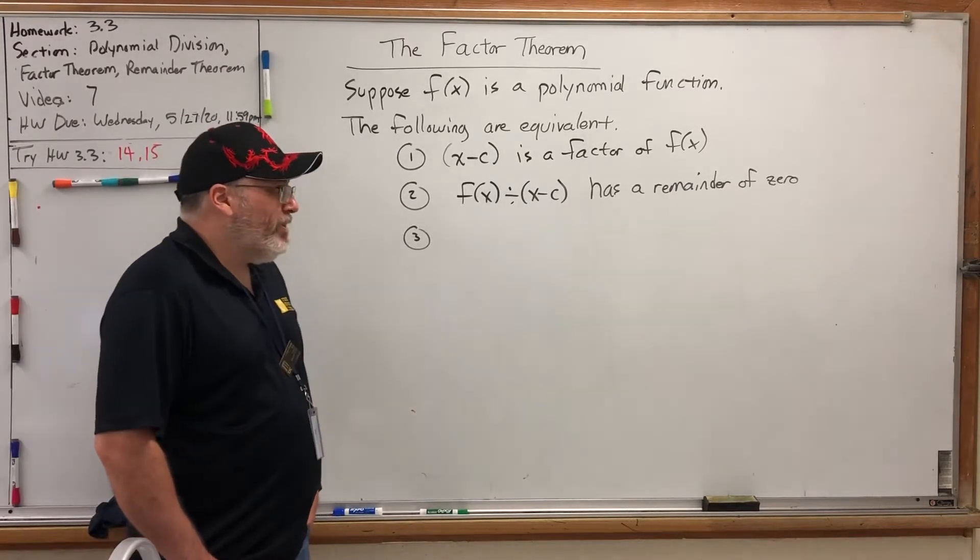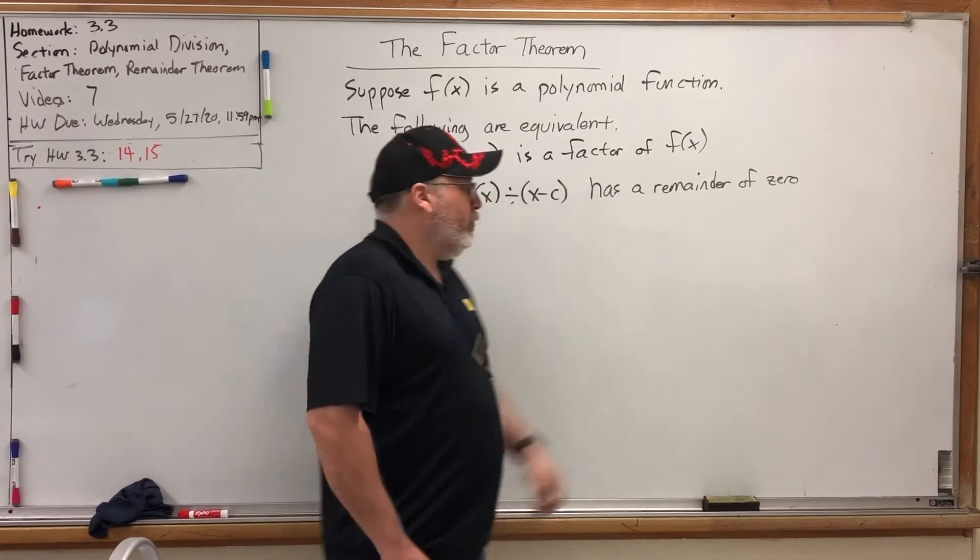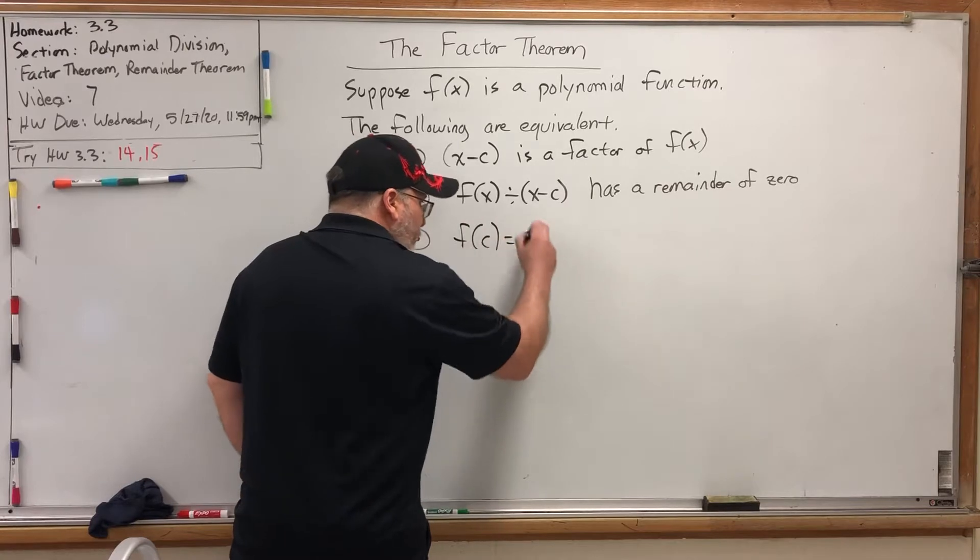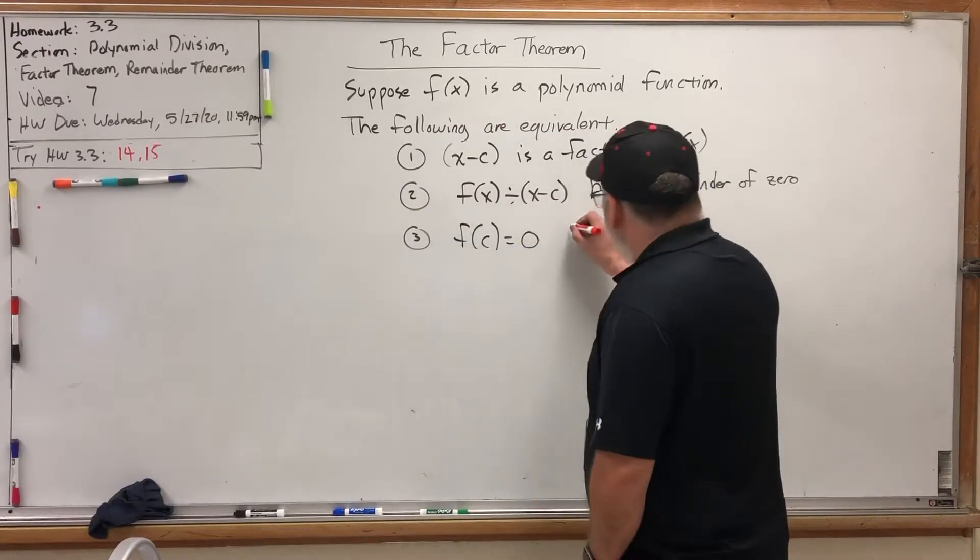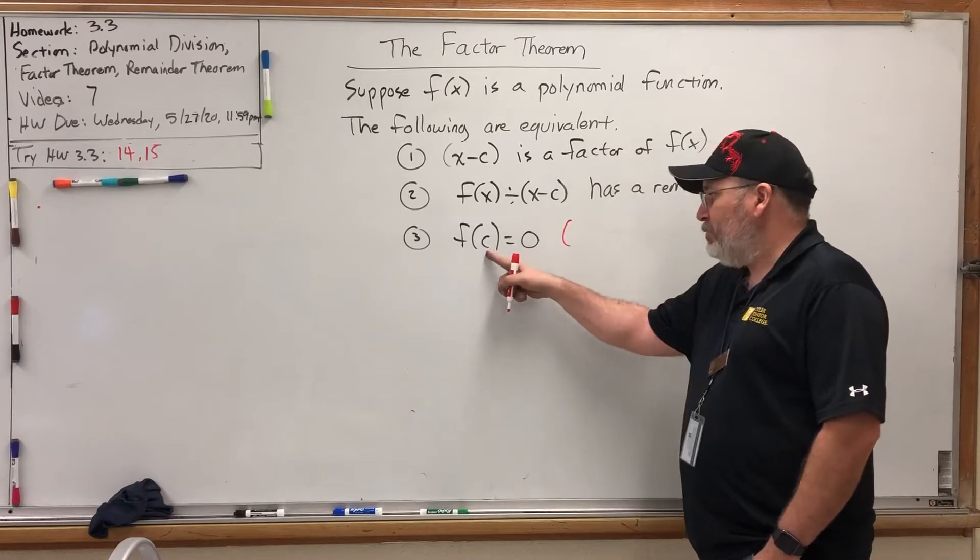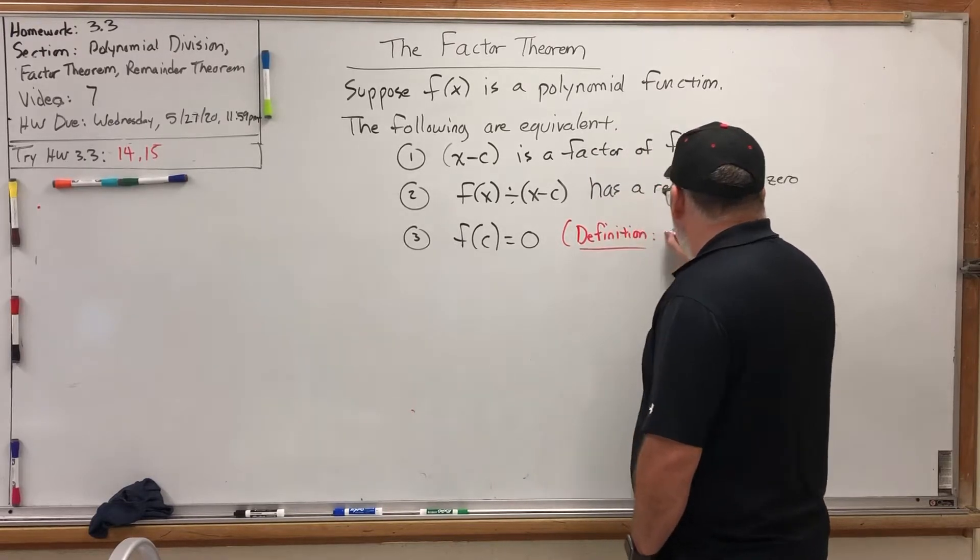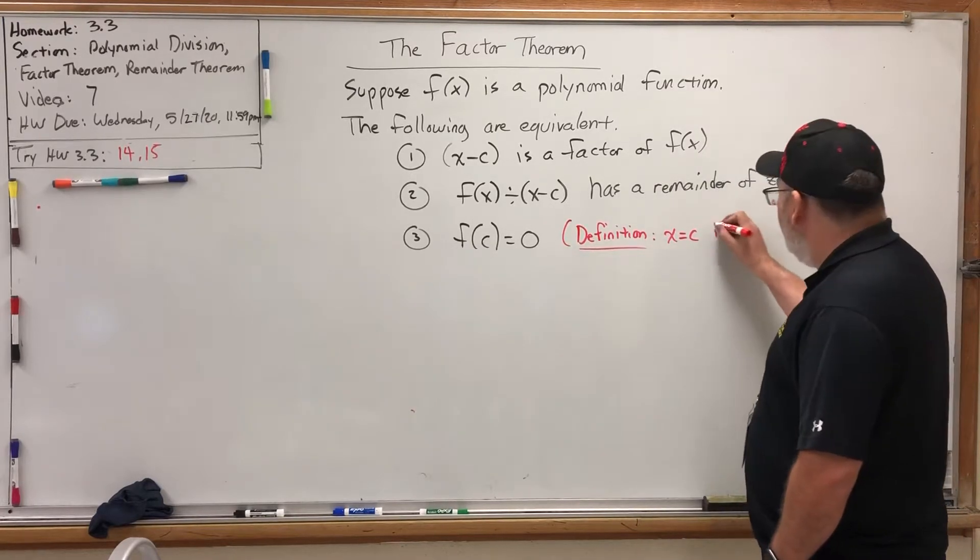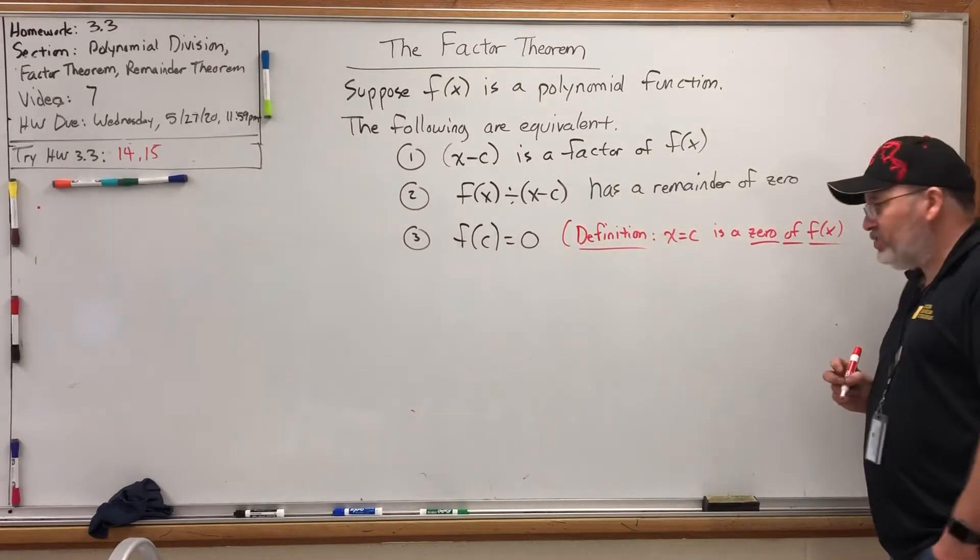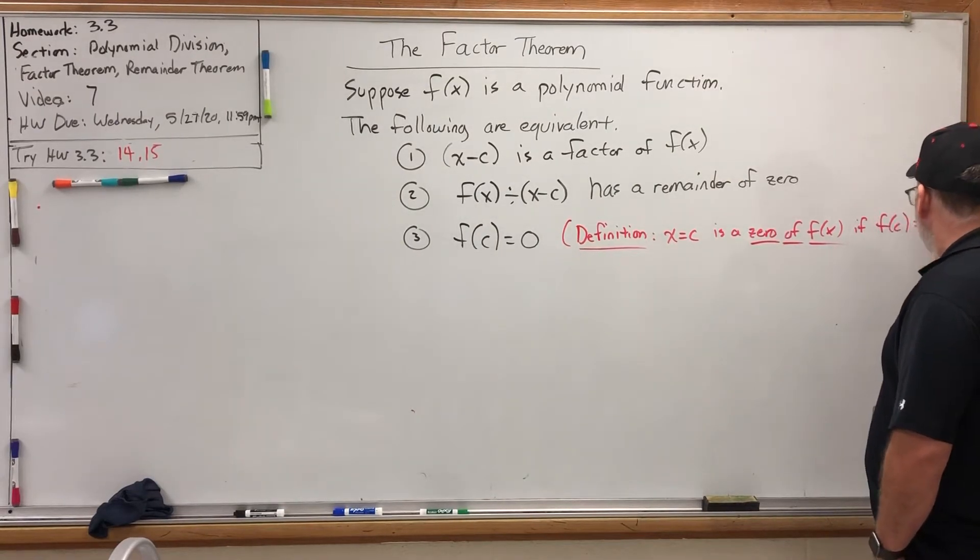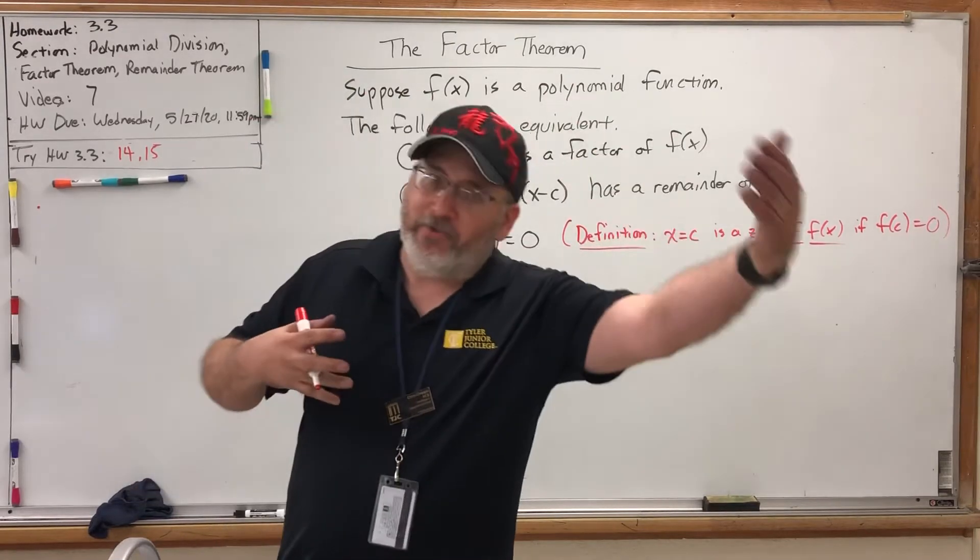Well, the third part brings in the remainder theorem, which says if you put this number into the function, you get the remainder. But if the remainder is zero, then F(c) is equal to zero. Now, I need to introduce new terminology here. Any time a number goes into a function and comes out zero, that brings up a definition. X equals a number, we'll say X equals c is a zero of F(x). It's a characteristic of a function if F(c) is equal to zero.